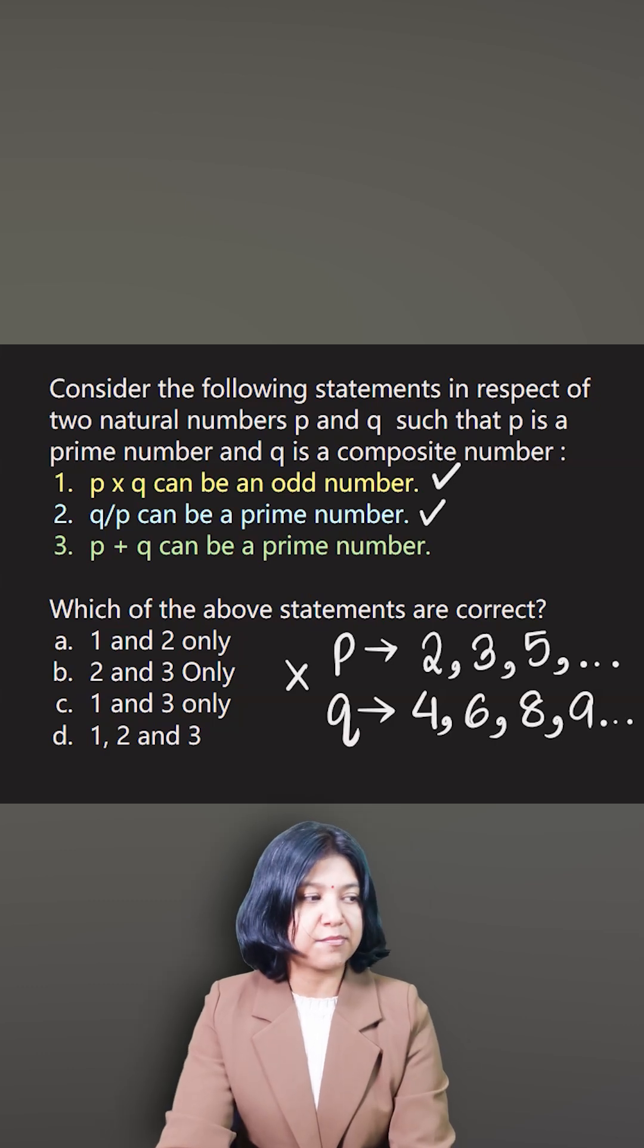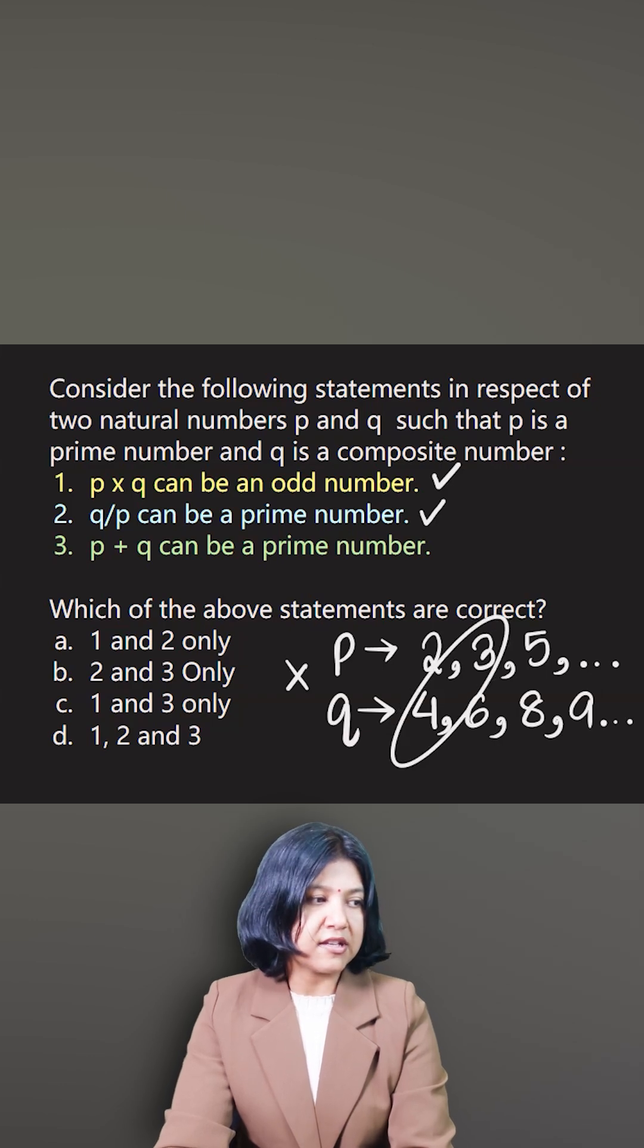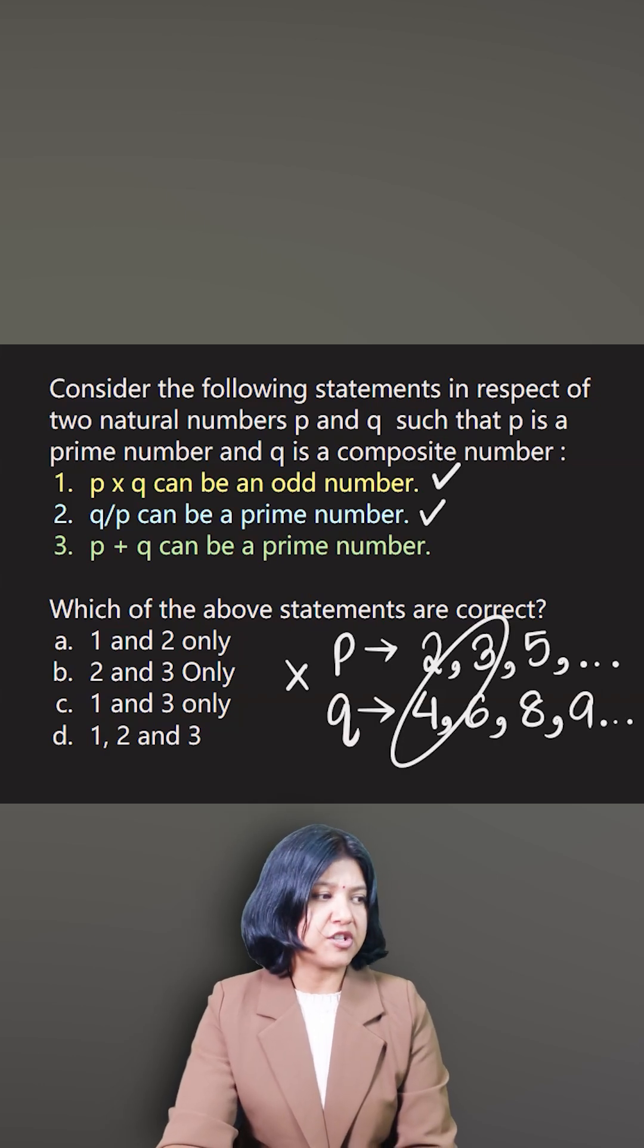Now P plus Q can be a prime number. Definitely, why not? If you take the sum of two numbers like 3 plus 4 equals 7, or you can try with 6 and 7 - 6 is a composite number, 7 is a prime number. So 6 plus 7 definitely is 13, which is a prime number.